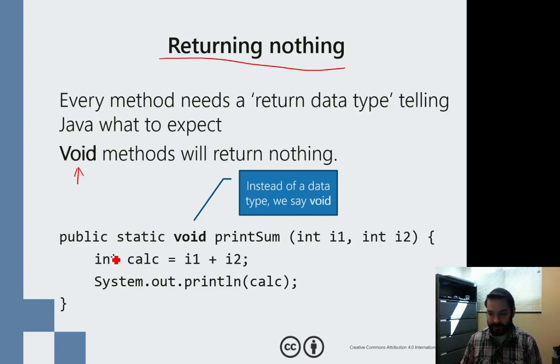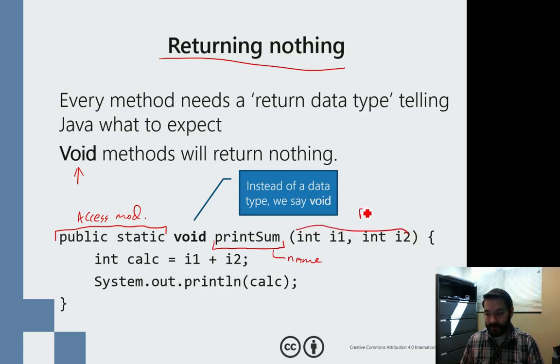Again, we look at this. I want to now instead of return that integer sum, instead of returning it, I want to actually just display it to the user immediately. Well, I keep the same access modifier as before. I renamed it. It's still a name. I still have these parameters.